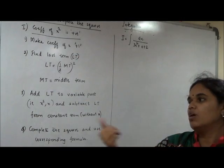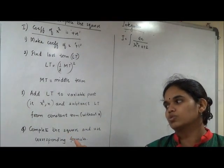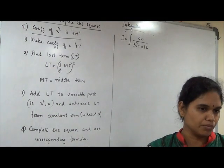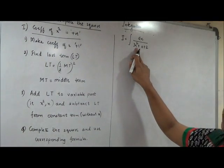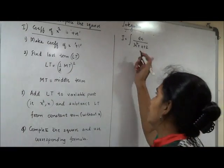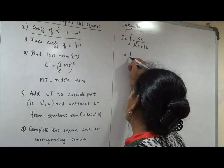These are the steps, main step. Once you finish that, you are supposed to complete the square and then use the corresponding formula. So I am just taking the working out here. Coefficient of x square is plus 3. I will make it plus 1. So I will be taking out 3 common outside.